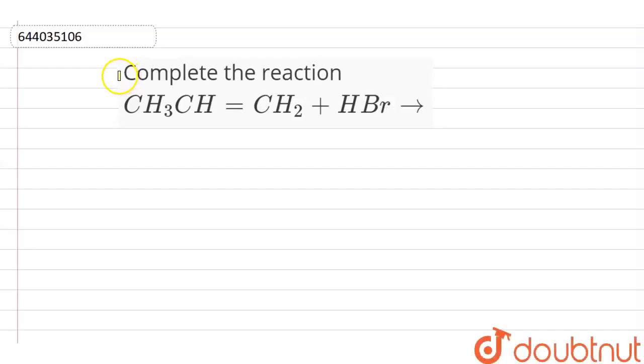Here is a question in which we complete the reaction. The reaction is CH3CH double bond CH2 plus HBr. This is our propene. When propene reacts with HBr, and HBr is hydrogen bromide.